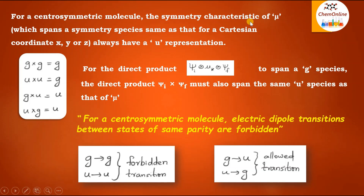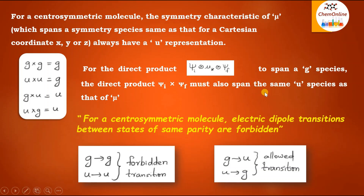For a centrosymmetric molecule, the symmetry characteristic of μ, that is the electric dipole moment, which spans a symmetry species same as that for Cartesian coordinates x, y, or z, always has a U representation. That is, the transition moment operator μ will always span a U representation. Here we can see the direct products of G and U: G into G gives G, U into U gives G, and G into U or U into G gives a U representation. So we can say that for the direct product ψi · μ · ψf to span a G species, the direct product of ψi into ψf must also span the same U species as that of μ, because μ always has a U representation. For this, among ψi and ψf, one has to be G and the other U.